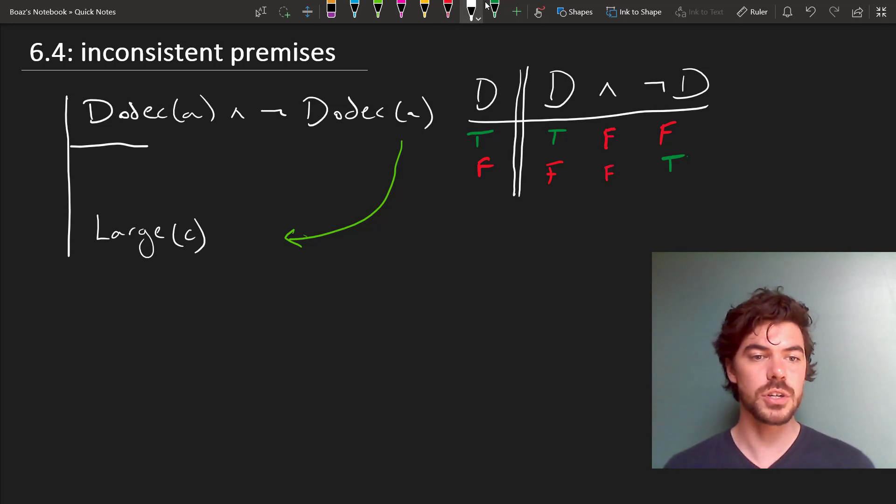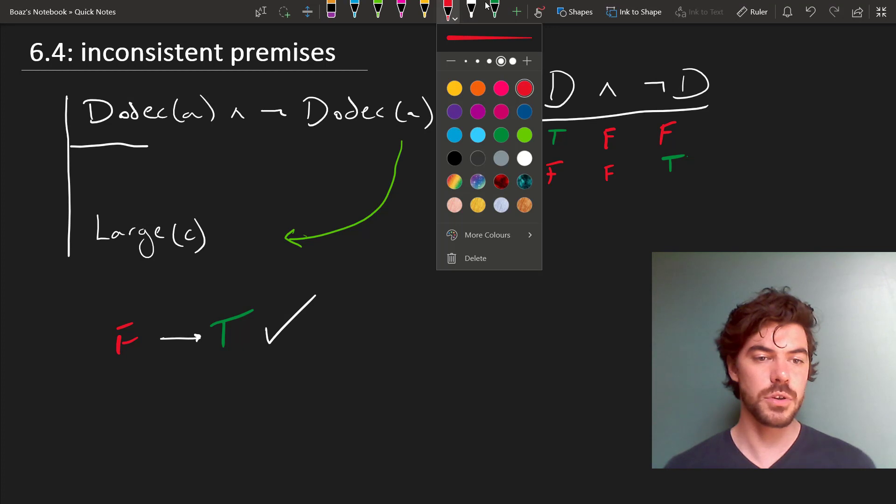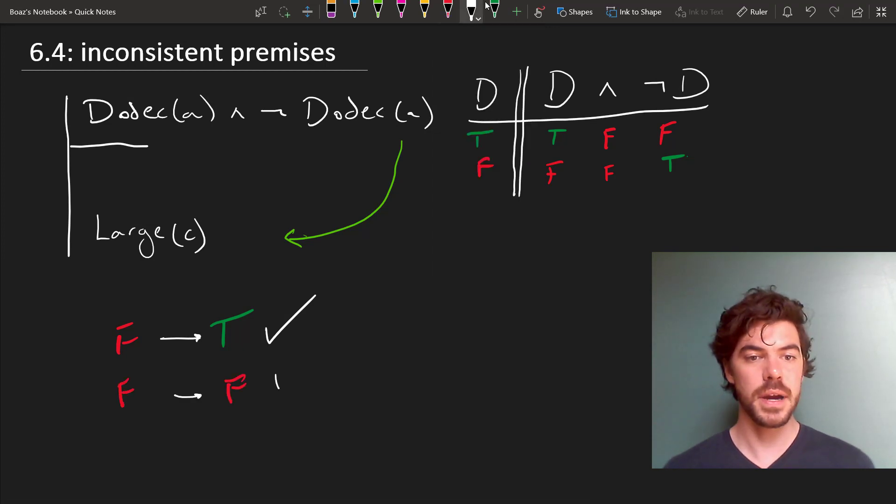But then remember that by our definition of logical validity, going from false to true is okay. And since this has to be false, it can never be that the premise is true and the conclusion is false. So suppose that C is not large, well then we're just going from false to false. But by the definition of logical consequence, that's also okay. The only thing that's not okay is to go from true to false.